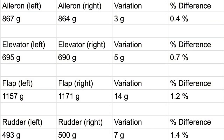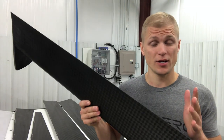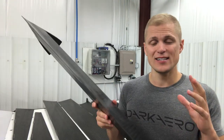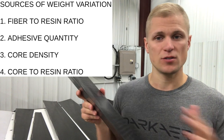I've got the weights up on the screen again, this time including the difference in weight from left to right. Let's talk through some of the sources of this variation so we can understand why we did so well on the ailerons and why we had a little bit more variation in the rudders. The best of all these in terms of variation is our ailerons, and I see four main sources for differences in weight.